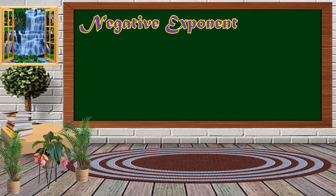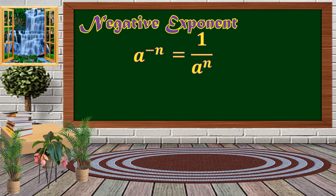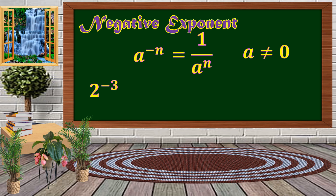Next, we have Negative Exponents. The format is 'a raised to negative n', which is equivalent to 1 over 'a raised to n', where 'a' should not equal 0 — otherwise the result is undefined. For example, 2 raised to negative 3 equals 1 over 2 cubed, which is 1 over 8, since 2 times 2 times 2 equals 8.